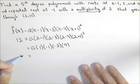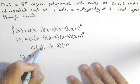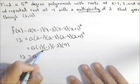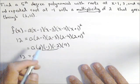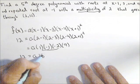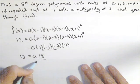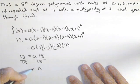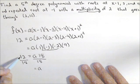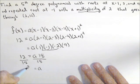So what we get is 12 equals a times, we have a negative 1 from those two, but when we multiply the 2 in, we get a positive 2, so 18. Divide both sides by 18, and we get a equals 12 over 18, or we could actually reduce that down to 2/3.